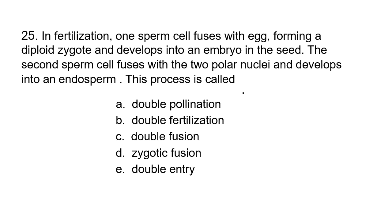Number 25: In fertilization, one sperm cell fuses with an egg forming a diploid zygote and develops into an embryo in the seed. The second sperm cell fuses with the two polar nuclei and develops into an endosperm. This process is called: a) double pollination, b) double fertilization, c) double fusion, d) zygotic fusion, or e) double entry. The correct answer is double fertilization.